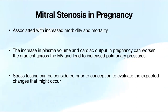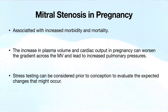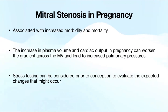A quick comment about mitral stenosis in pregnancy: since many patients with rheumatic heart disease are in childbearing age, this topic does come up. It is associated with increased morbidity and mortality because the increase in plasma volume and cardiac output in pregnancy can worsen the gradients, leading to increased pulmonary pressures. If a patient wants to have a child, we can consider stress testing prior to conception to evaluate expected changes and determine if she will need an intervention before trying to conceive.